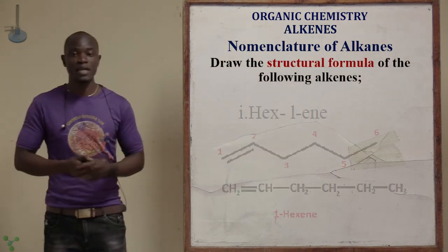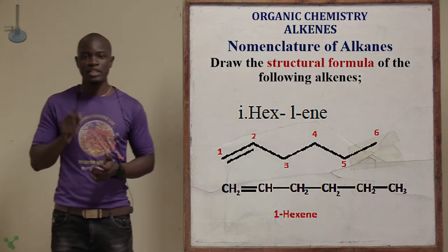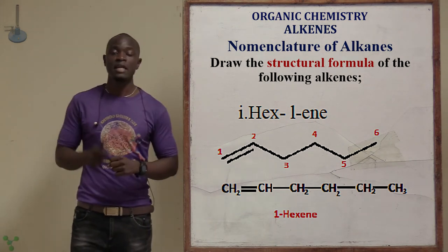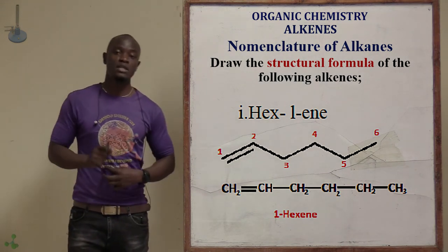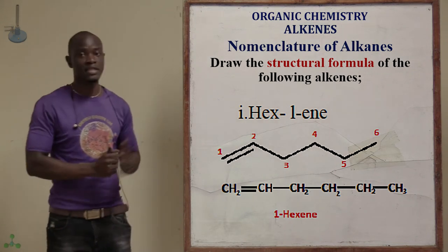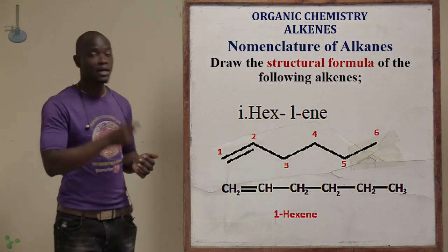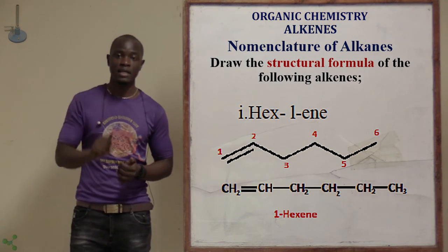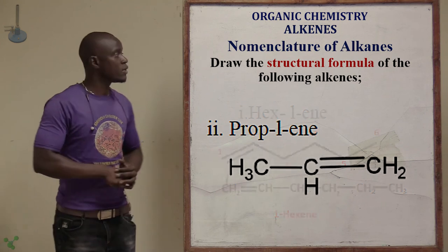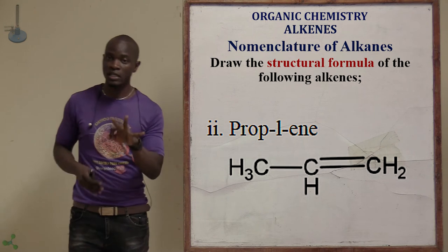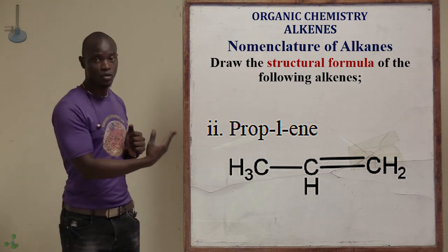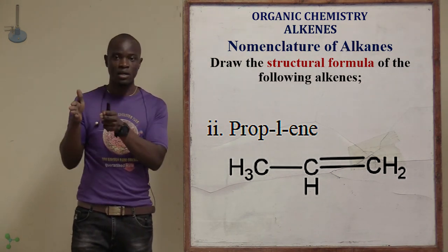Let's try a question: for each of the following alkenes, draw the structural formula. For hex-1-ene, the double bond is found immediately after carbon number 1. For prop-1-ene, we have three carbons and the double bond immediately after carbon number 1.